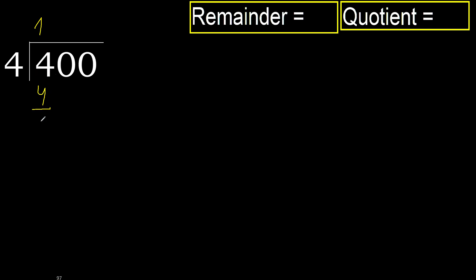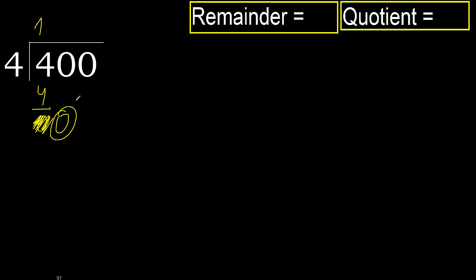4 minus 4 is 0. Next. Eliminate 0 on this side. 0, but 0 is less, therefore next. 2 numbers, therefore complete.